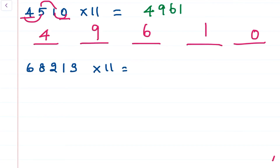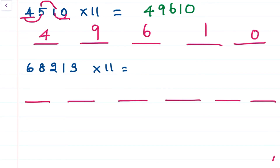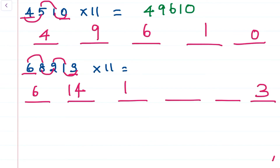Our last example is 68213 into 11. Here we have a five-digit number so we mark six parts. Our first part answer is 6, the last part answer is 3, and the middle parts are consecutive additions: 6 plus 8 is 14, 8 plus 2 is 10, 2 plus 1 is 3, and 1 plus 3 is 4.